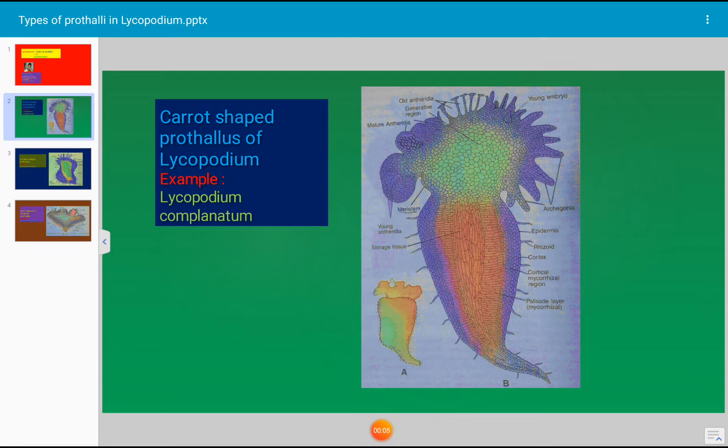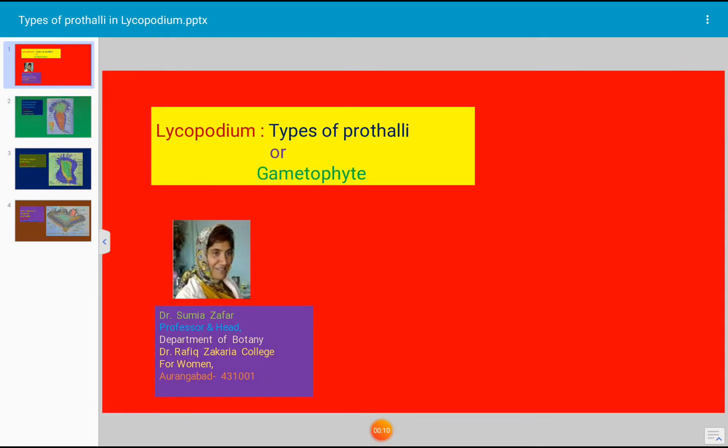Today's topic for discussion is types of prothalli in Lycopodium. Prothallus, also known as gametophyte or gamet-producing plant, is found in Lycopodium, a pteridophytic plant. There is great variation in form and structure of mature gametophyte in different species of Lycopodium. Different shapes of gametophyte occur in different species, and in this slide three main types of prothalli are discussed.